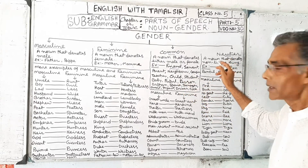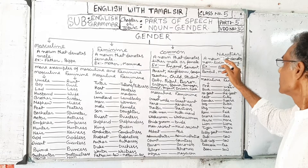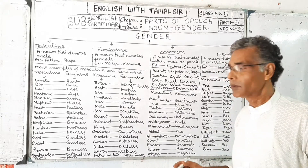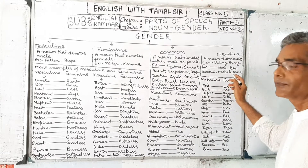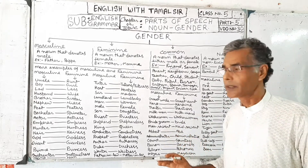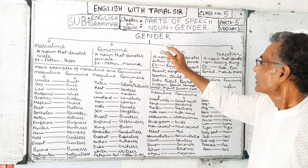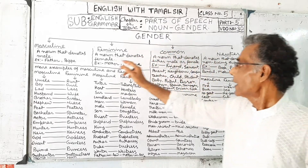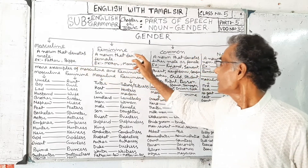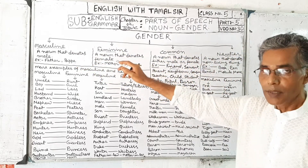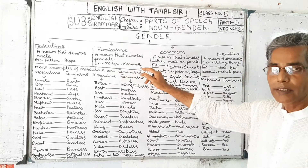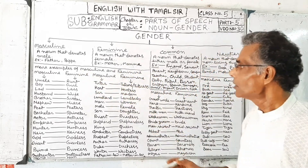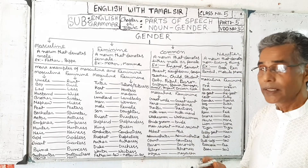Next is neuter gender. Neuter means a noun that denotes a non-living thing. For example: book, pen, pencil, mobile phone, and many others. So if we divide gender, we have masculine and feminine on one side, and neuter on the other. The definition is that masculine and feminine nouns denote living beings.